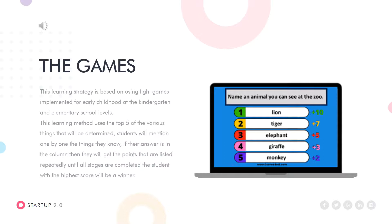This learning method uses the top 5 of various things that will be determined. The student will mention one by one the things they know. If their answer is in the column, they will get the points listed. This continues repeatedly until the stages are complete, and the student with the highest score will be the winner.